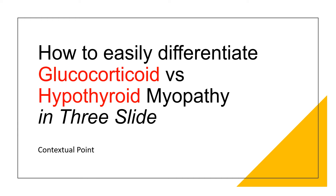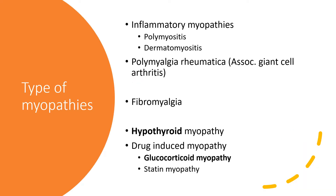Hello, today I am going to talk about how to differentiate glucocorticoid myopathy from hypothyroid myopathy, which is really important for Step 2 purposes and also Step 1. Before trying to differentiate the two myopathies, we need to talk about the different types of myopathies in general, which will make it more clear.